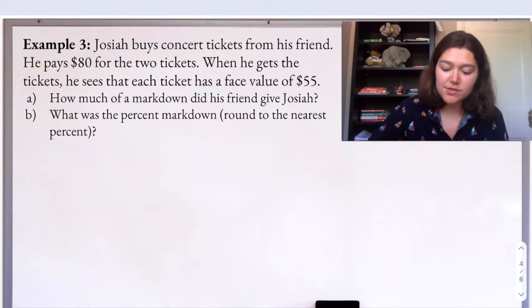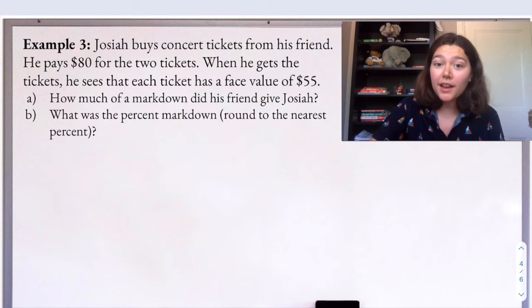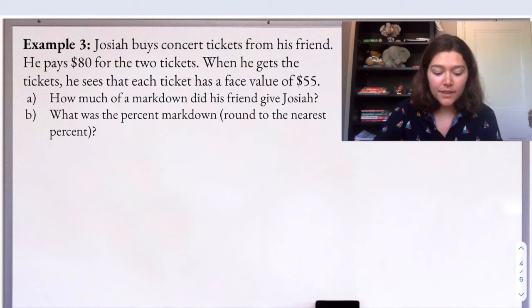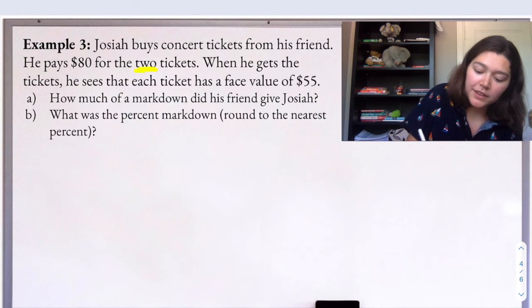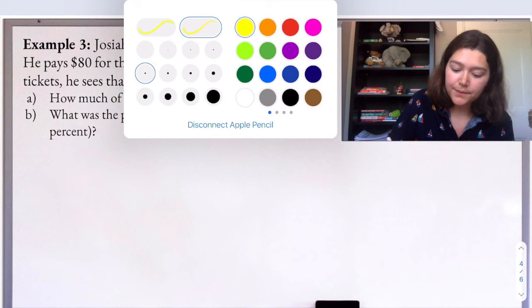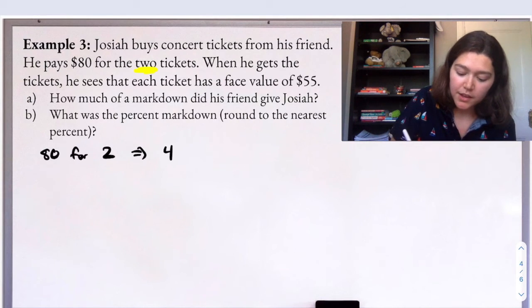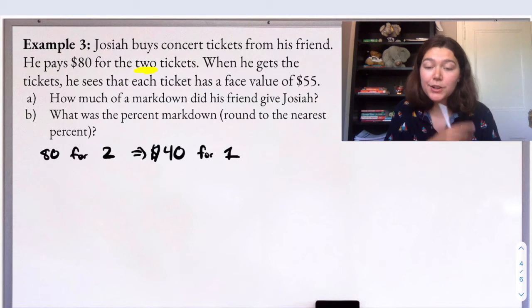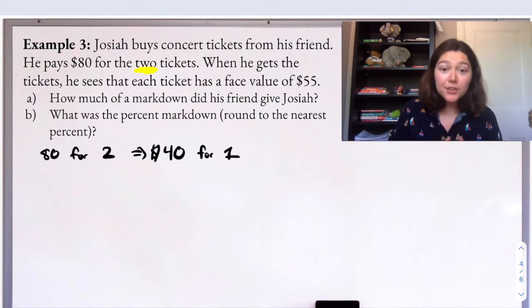So step one, we need to find the markdown that Josiah's friend gave him. So that means how much less is Josiah paying for these tickets compared to the original price? Now you have to read problems carefully because there's a really important word here that could mix this up. He pays $80 for two tickets. Two tickets. So then how much does he pay for one ticket? Well, he pays $80 for two. Then that would mean we can divide by two. He pays $40 for one ticket. So Josiah is paying $40 per ticket. But when he gets the tickets, he sees that each ticket has a face value of $55. So that's the original price, the sticker price, what's advertised.